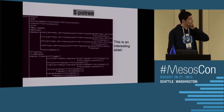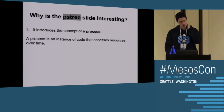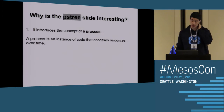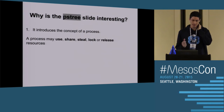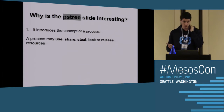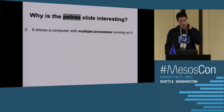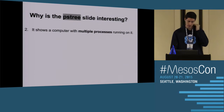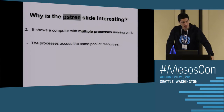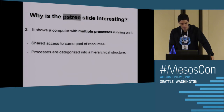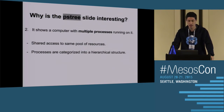This is the output of PS, which I'm sure pretty much everyone here is familiar with. This is an interesting slide because it introduces a process as an instance of code that accesses resources over time. The concept of accessing resources is important — you can use them, share them, steal, lock, or release them. Not only is there one process, but there are multiple processes, meaning they have to share resources and are categorized into a kind of structure.